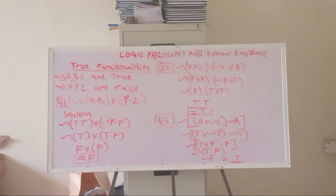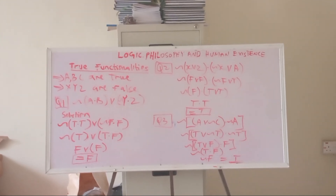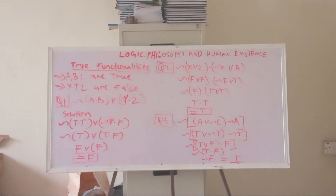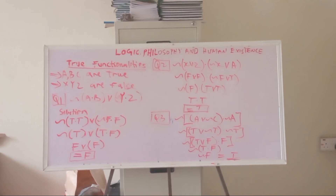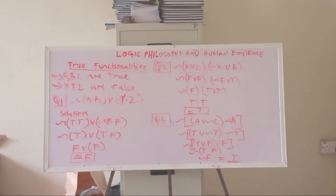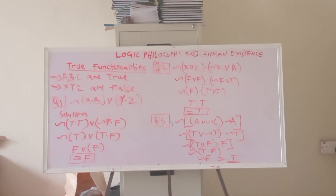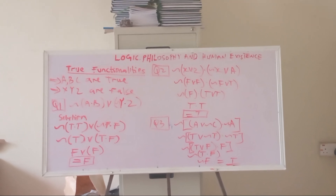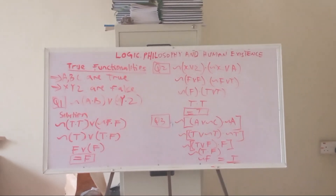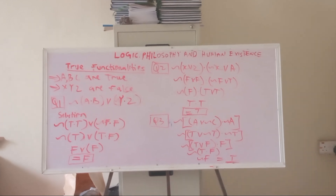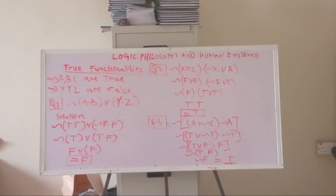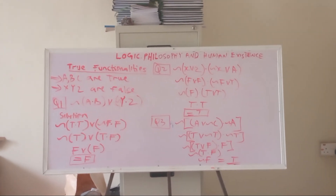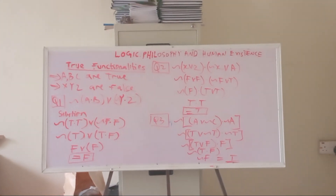The second equation is: ¬(x ∨ z) ∧ (¬x ∨ a). First, convert to true functionality. Since x and z are false and a is true: ¬(F ∨ F) ∧ (¬F ∨ T).